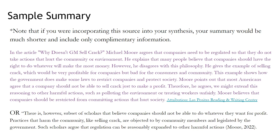'He explains that many people believe companies should have the right to do whatever will make the most money; however, he disagrees with this philosophy. He gives the example of selling crack, which would be very profitable for companies but bad for consumers and the community. This example shows how the government does make laws to restrict companies and protect society. Moore points out that most Americans agree a company should not sell crack just to make a profit; therefore, he argues we might extend this reasoning to other harmful actions, such as polluting the environment or treating workers unfairly. Moore believes companies should be restricted from committing actions that hurt society.'